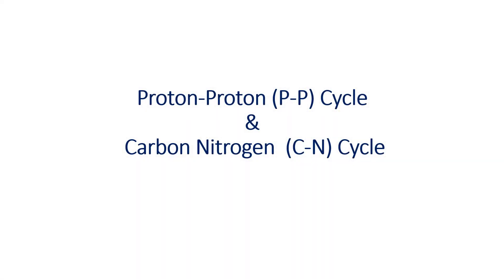Hello Learners. In this video we are going to talk about the proton-proton (PP) cycle and the carbon-nitrogen (CN) cycle. These are stellar thermonuclear reactions which happen in the core of various stars like the Sun. Basically these are nuclear fusion reactions, so first we will see what nuclear fusion is.